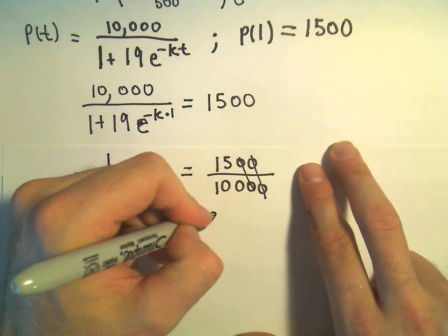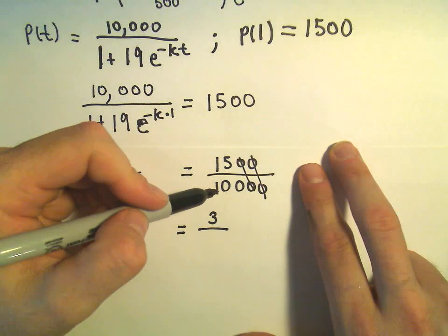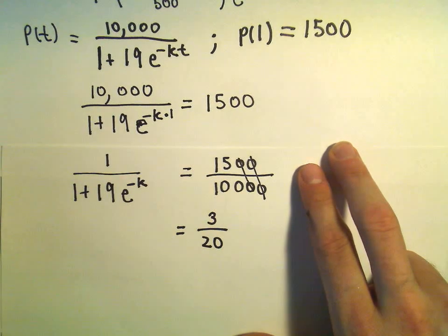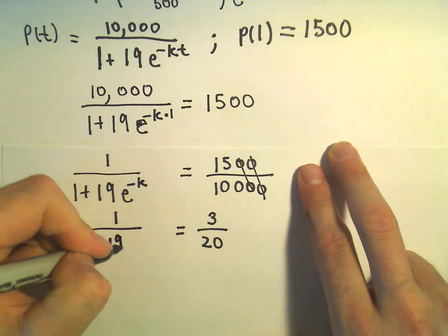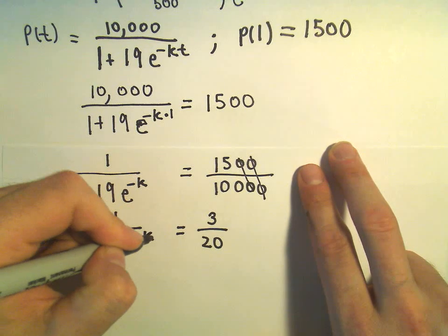Let's see. 5 goes into 15 three times. 5 will go into 100 20 times. We still have 1 over 1 plus 19 e to the negative k on the left.